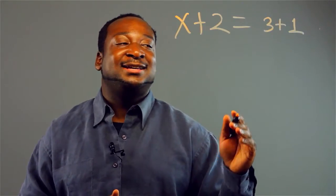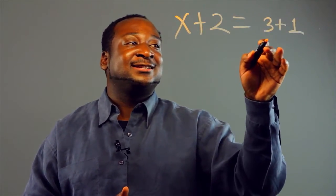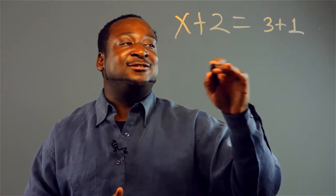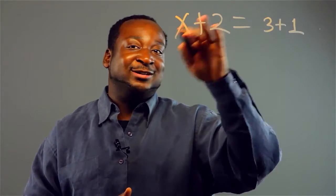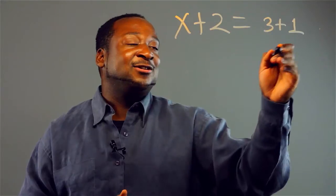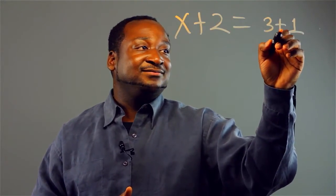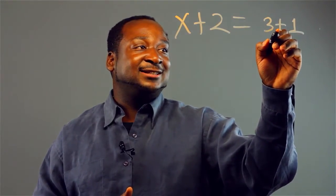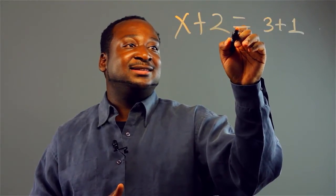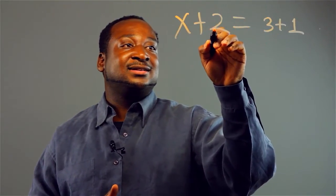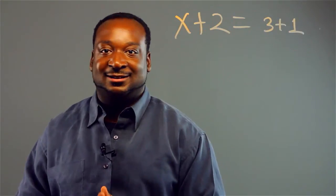A cool way to read this is that you could also read this in reverse. In math, you could always do things backwards. So we can also read this as 1 plus 3 is equal to 2 plus x.